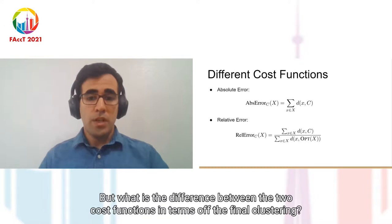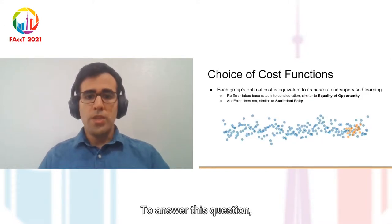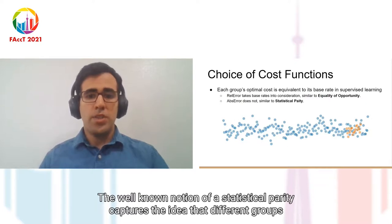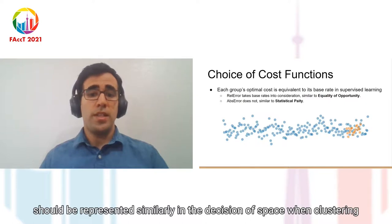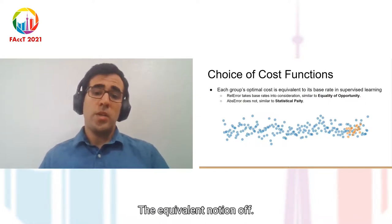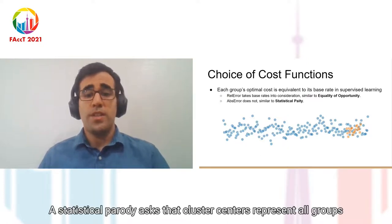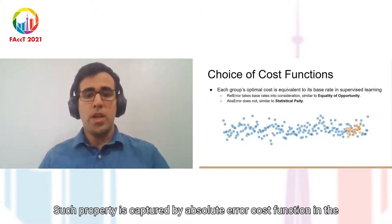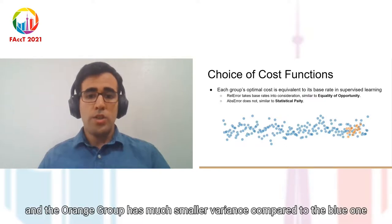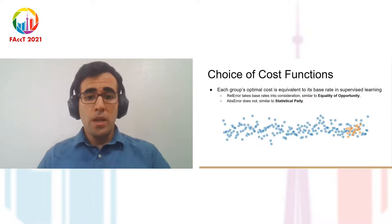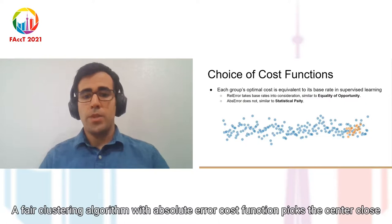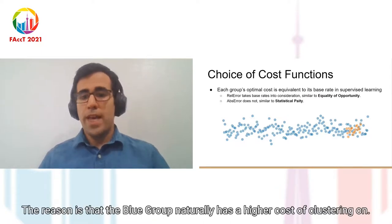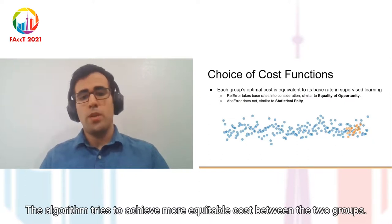But what is the difference between the two cost functions in terms of the final clustering? To answer this question, let us draw an analogy to existing notions of fairness in supervised learning. The well-known notion of statistical parity captures the idea that different groups should be represented similarly in the decision space. When clustering, the equivalent notion of statistical parity asks that cluster centers represent all groups equally well regardless of their potential different distributions. Such property is captured by absolute error cost function. In the example presented here, the orange group has a much smaller variance compared to the blue one. With no regard for this difference in distribution, a fair clustering algorithm with absolute error cost function picks a center close to the blue group's center. The reason is that the blue group naturally has a higher cost of clustering and the algorithm tries to achieve more equitable costs between the two groups.